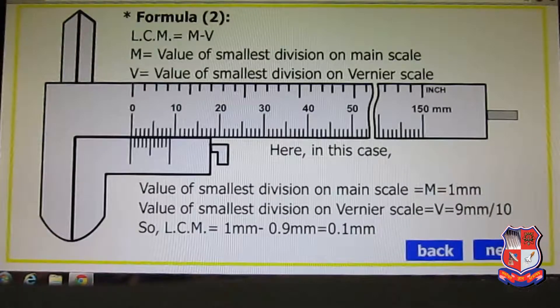We have studied that the value of the smallest division on main scale M is 1mm, and the value of the smallest division on vernier scale V is 9mm divided by 10. How? You can see here there are 10 divisions on the vernier scale that are exactly equal to 9mm of the main scale. So our least count in this formula will be 1mm minus 0.9mm, which equals 0.1 millimeter.